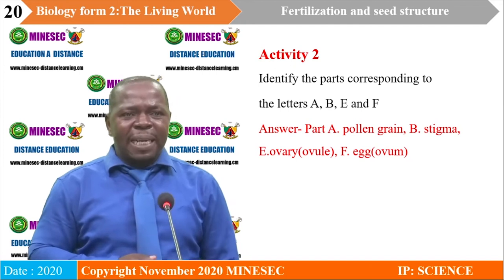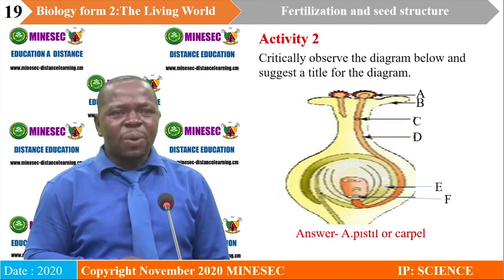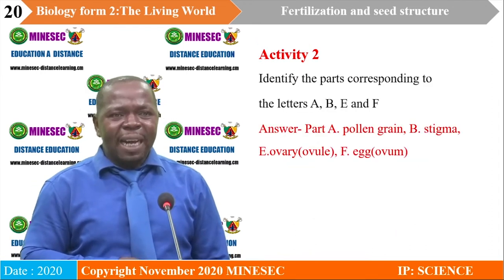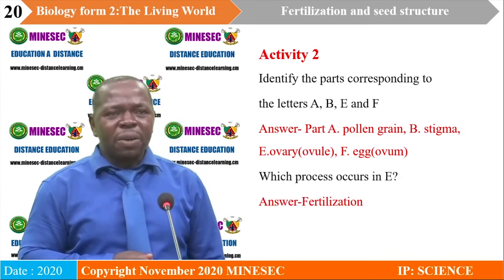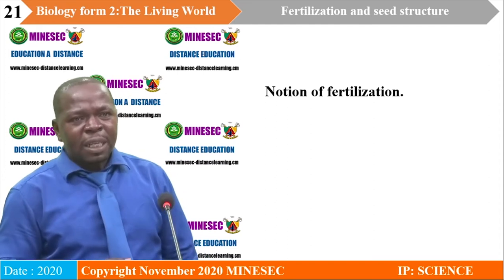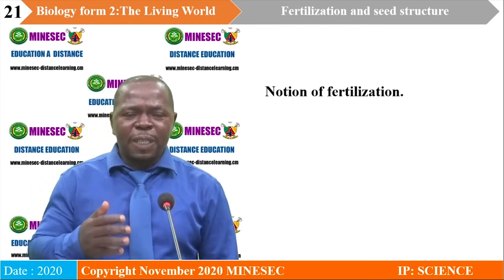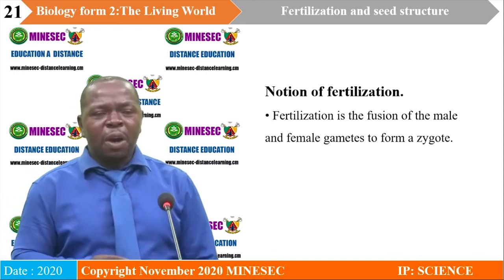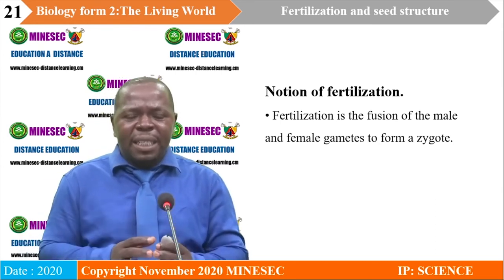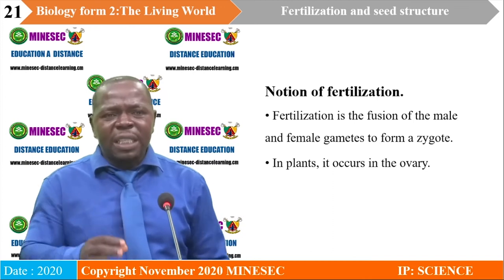Now we have identified the parts. Which process occurs in part E? Part E is the ovary. The process that occurs in the ovary is fertilization. Fertilization in flowering plants: fertilization is the fusion of the male and female gametes to form a zygote. In plants, fertilization occurs inside the ovary.